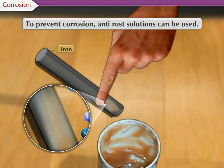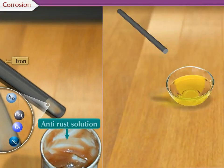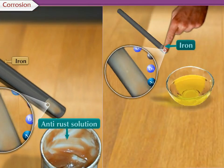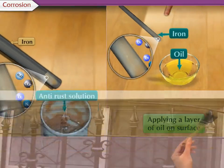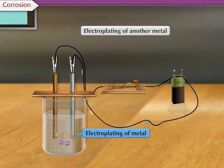To prevent corrosion, anti-rust solutions can be used. Corrosion can be prevented by applying a layer of oil, paint, a thin layer of zinc, or by the process of electroplating.